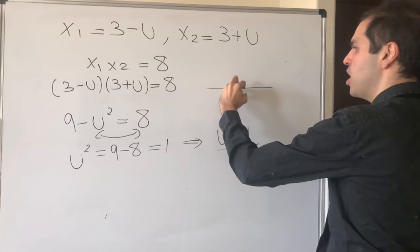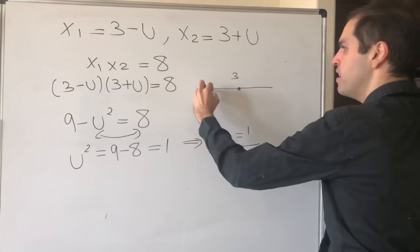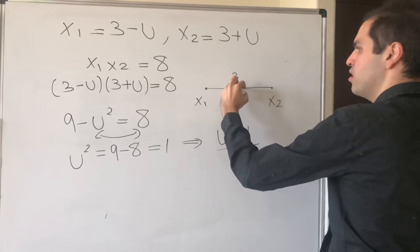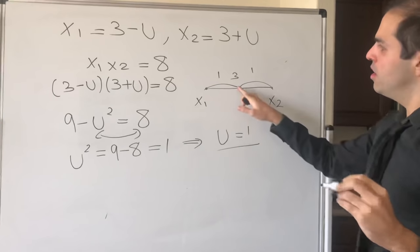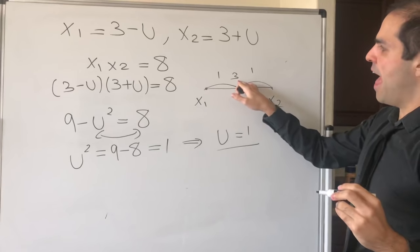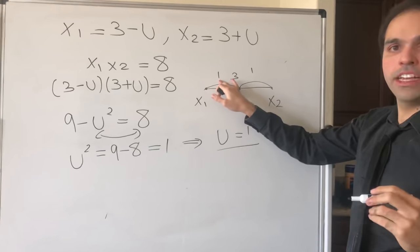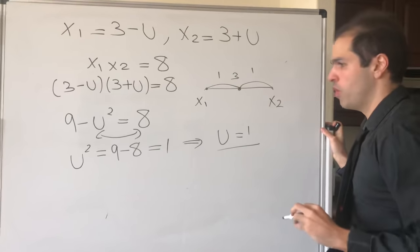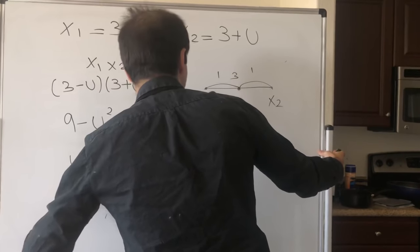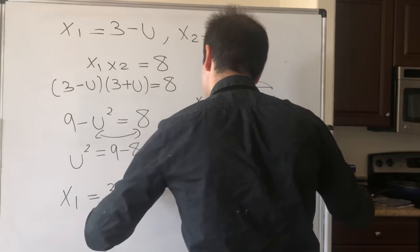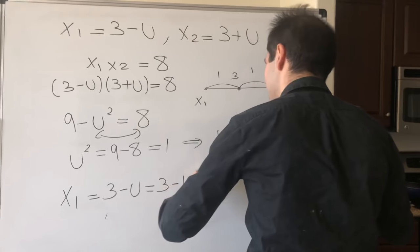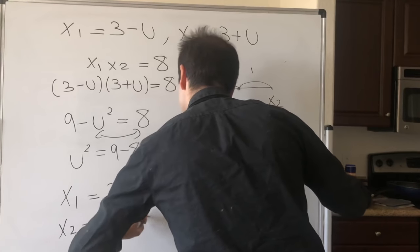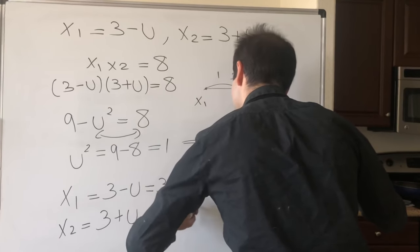So what is this saying about our roots? Well, we know the midpoint is 3, x₁ is on the left, x₂ is on the right, and the distance is 1. This is saying x₁ is 3 - 1, which is 2, and x₂ is 3 plus the distance, which is 4. So x₁ = 3 - u = 3 - 1 = 2, and x₂ = 3 + u = 3 + 1 = 4.